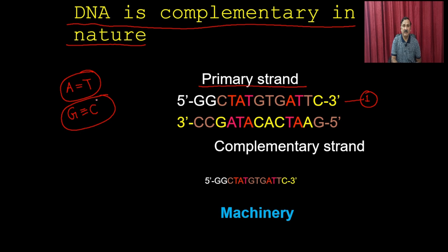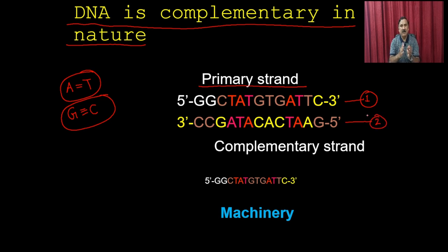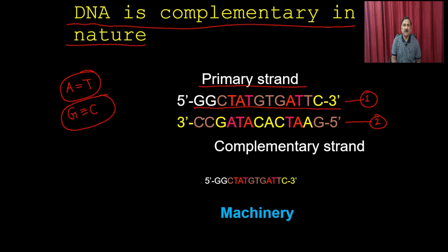A pairs with T and G pairs with C. So if you have information about the primary strand, you can generate the complementary strand — wherever you have G put C, wherever you have C put G, wherever you have T put A, and wherever you have A put T. This is the main basis of DNA synthesis. The enzyme reads the sequence on the top strand and attaches nucleotides complementary to each other.